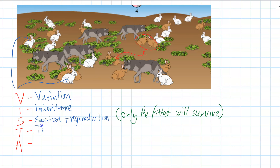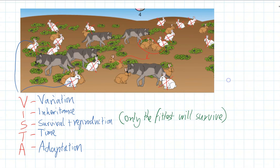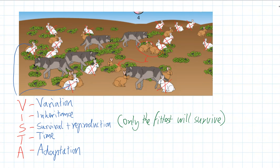T is time, because survival and reproduction happens over lots and lots of generations, although it can happen quite quickly within just a few generations. After enough time, the population becomes adapted to where it's living. So A is adaptation. The beneficial trait — in this case brown fur in rabbits — is surviving and reproducing more, so over time the white rabbits are reducing. Most of the population is now brown and better adapted to living in this desert, because their brown fur is camouflaging them.